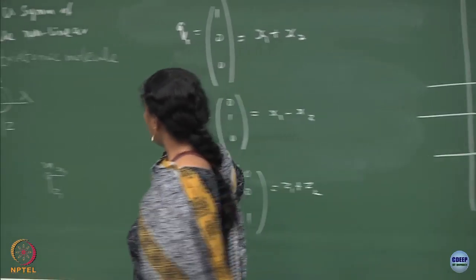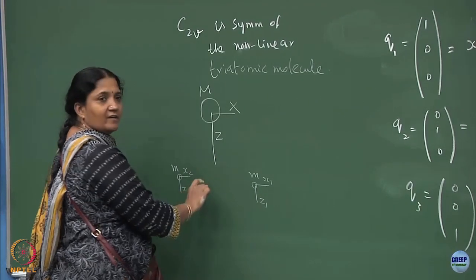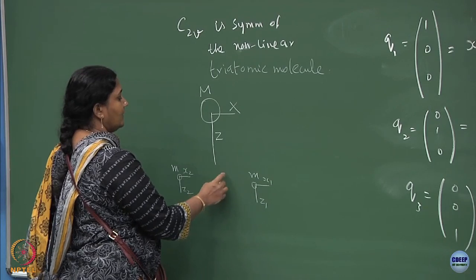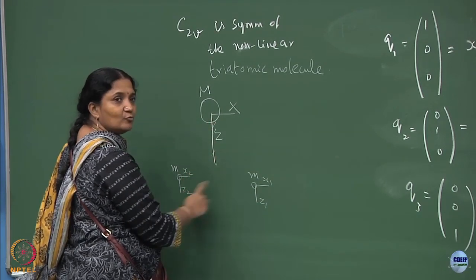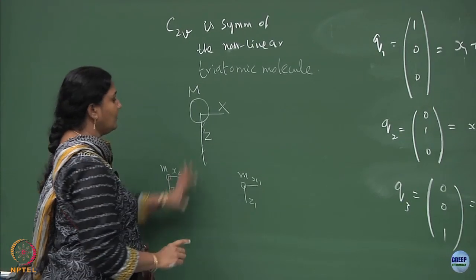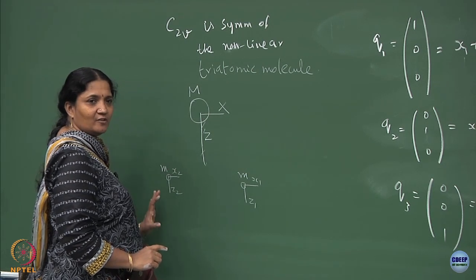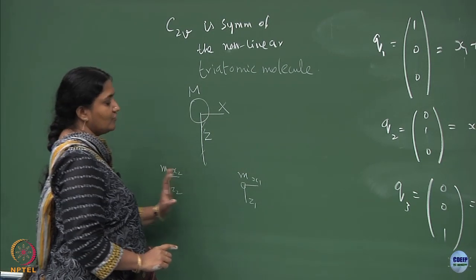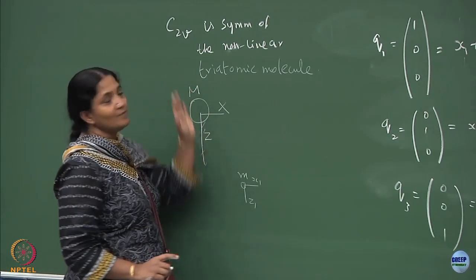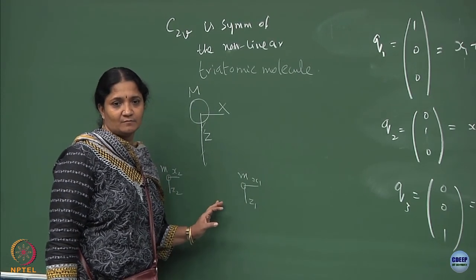Another way of seeing is that if I put an axis through this and do a 180 degree rotation, these two will exchange. If I put a mirror here, these two atoms which are identical will go into each other. If I put a mirror on this plane, this atom goes into itself. That is also symmetry. So, C2v is a symmetry of such a molecule under consideration.